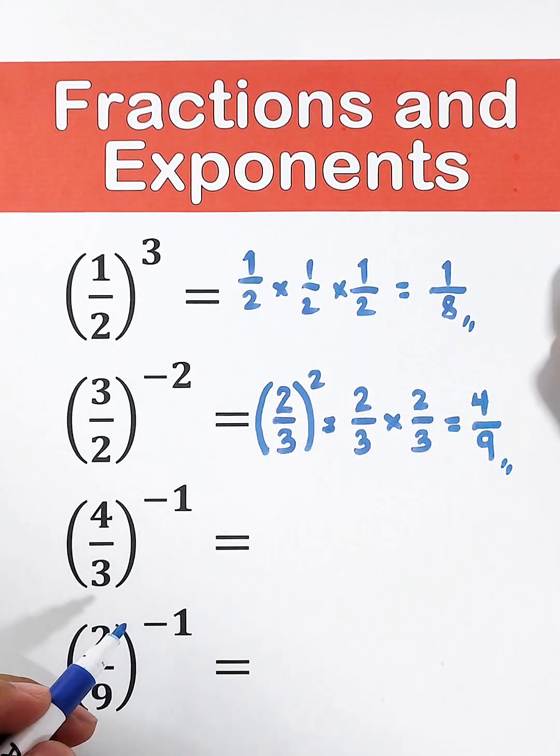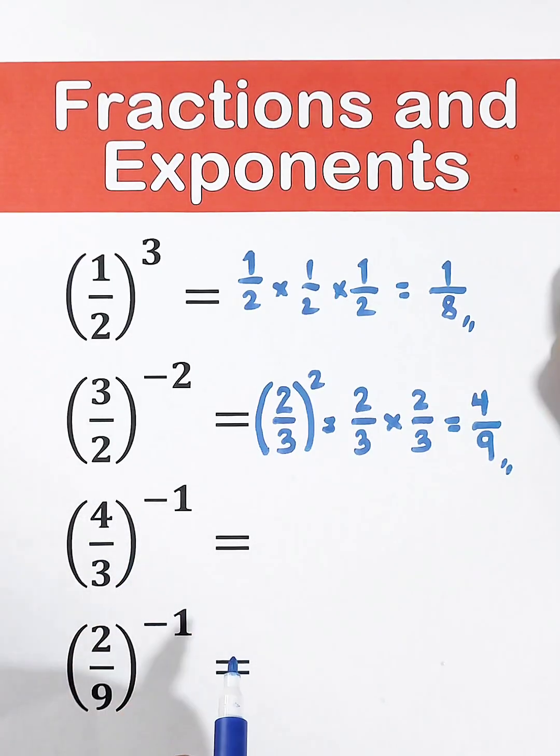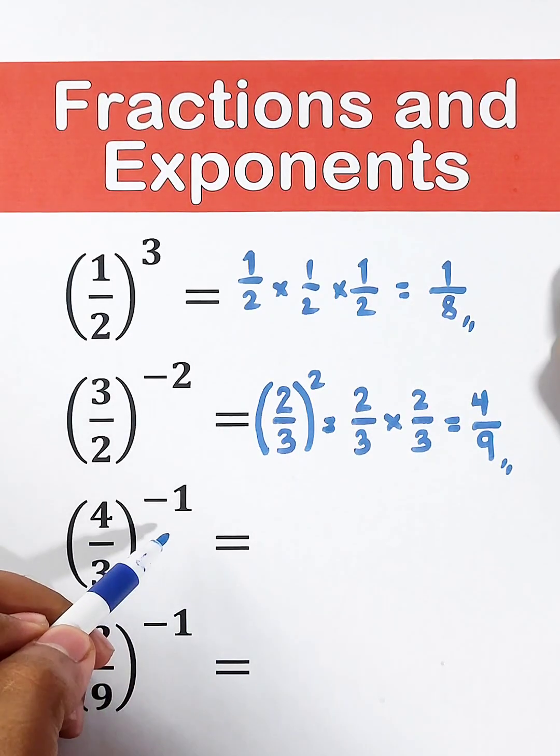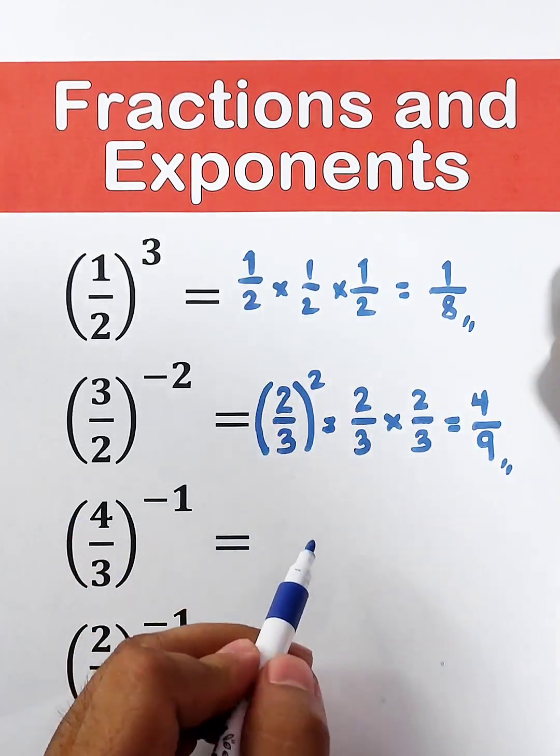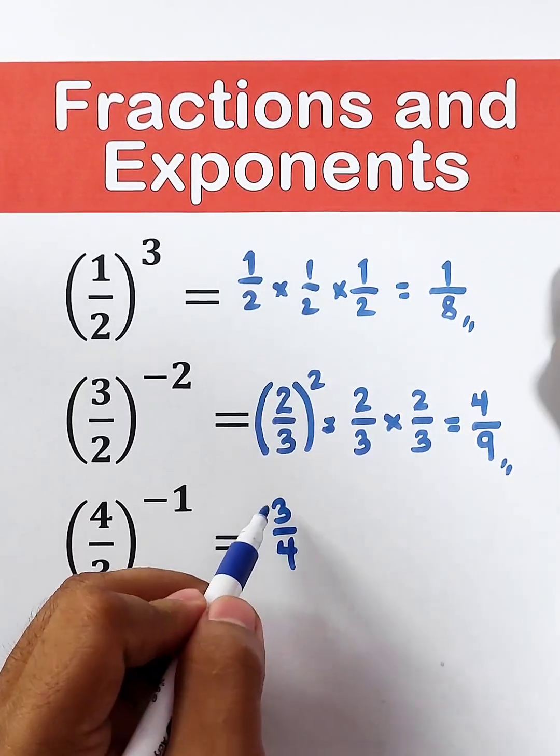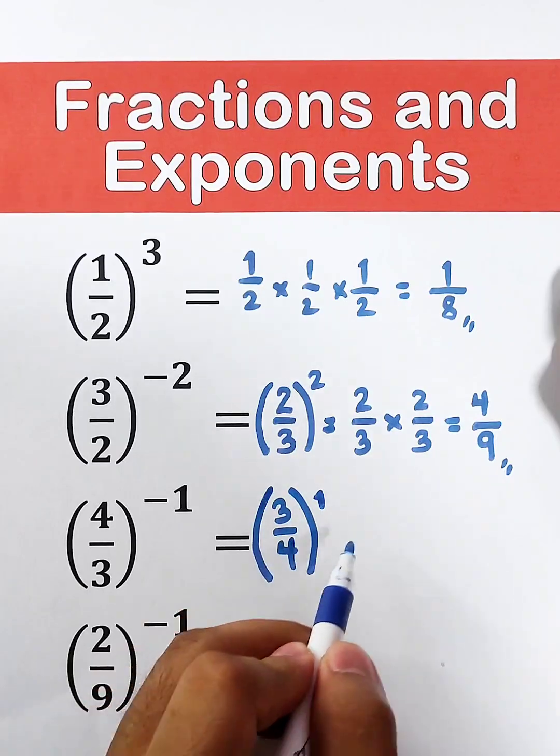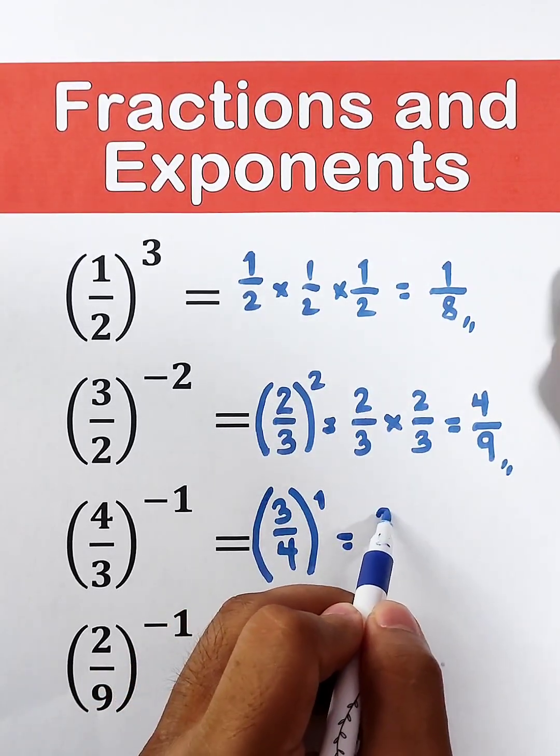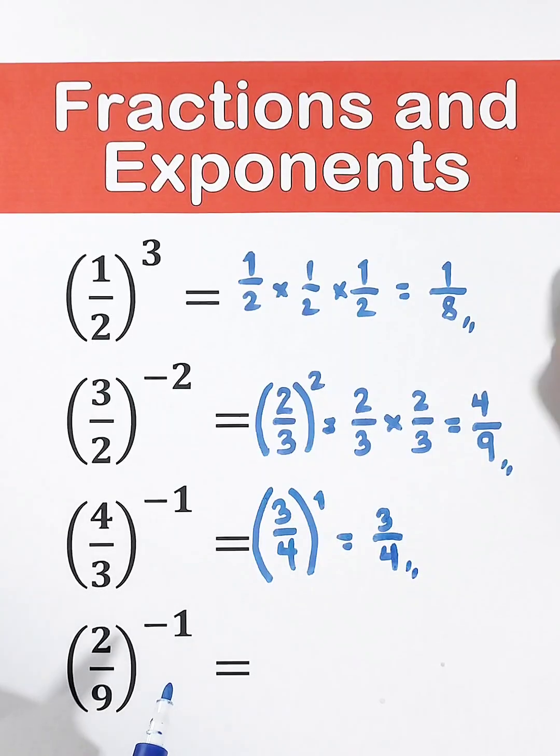Now let's move on with the third example. We have 4 over 3 raised to negative 1. As you can see, the exponent is negative, so first we need to get the reciprocal of 4 over 3, and that would be 3 over 4, raised to 1. And to simplify this, the answer is simply 3 over 4.